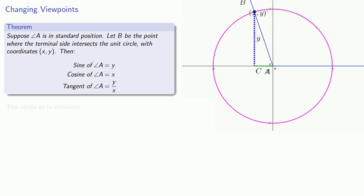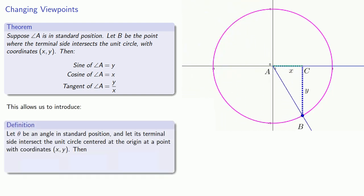And this allows us to introduce the following. Let theta be an angle in standard position, and let its terminal side intersect the unit circle centered at the origin at a point with coordinates x, y. Then the sine of theta is y, the cosine of theta is x, and the tangent of theta is y over x.